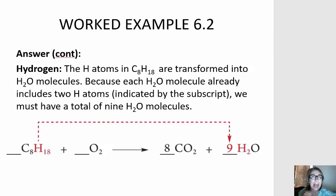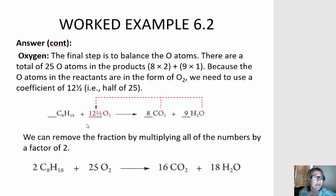However, when we look at our oxygen, I have 8 times 2, which is 16, plus 9 times 1, which is 9. So 16 plus 9 is 25. And there's no whole number that we can multiply 2 by to get 25. I can multiply 12 and a half by 2 to get 25.